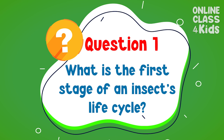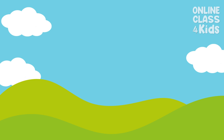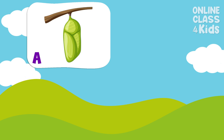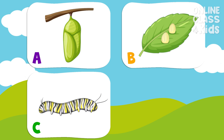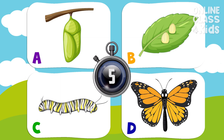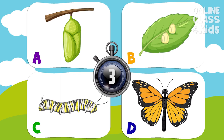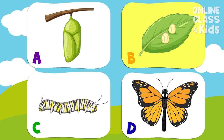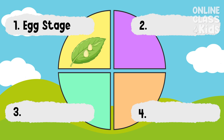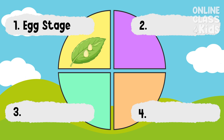What is the first stage of an insect's life cycle? Is it A, B, C, or D? Letter B. The first stage of an insect's life cycle is the egg stage. Very good!